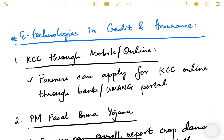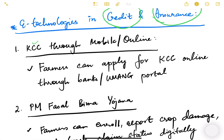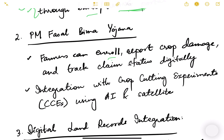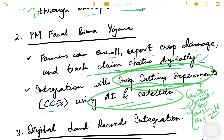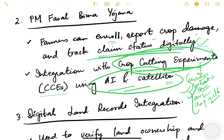E-technologies in credit and insurance are also very important. Through the Kisan Credit Card (KCC) online via banks or the UMANG portal, farmers can apply for agricultural loans digitally. Under PM Fasal Bima Yojana, farmers can enroll, report crop damage, and track claim status digitally. Integration with crop cutting experiments (CCE) using AI and satellite data helps assess average crop yields per village or area, enabling proper claim settlement when crop damage occurs.